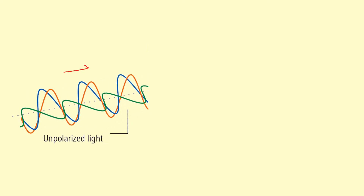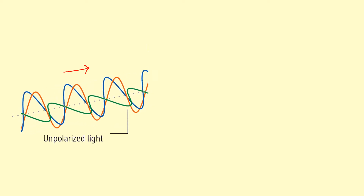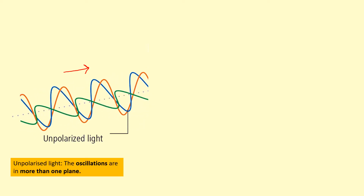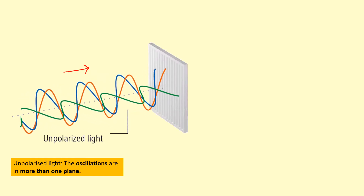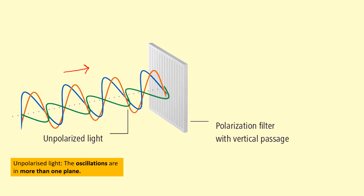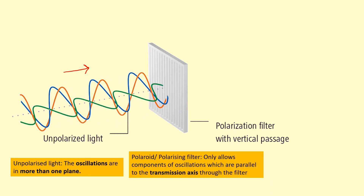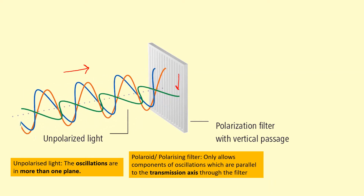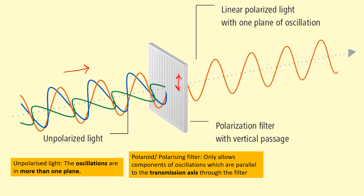This unpolarized light is traveling in this direction, but the electric field of this unpolarized light is oscillating in many planes. Unpolarized light is where the oscillations are in more than one plane. When it goes to a polarizing filter, the filter only lets through components of the electric field which are oscillating parallel to the transmission axis. In this case the transmission axis is vertical, so only components of the electric field parallel to that vertical axis are allowed through.